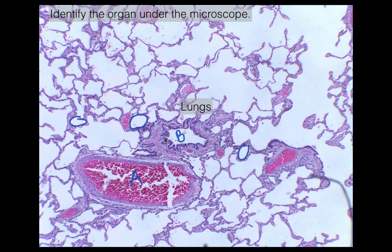We also have capillaries — these slides are from your lab by the way — and you can see a little capillary there. You'll typically find them in between the alveoli. There's another one right there; they're kind of these little circles in between the alveoli.